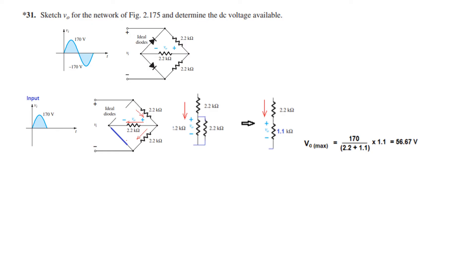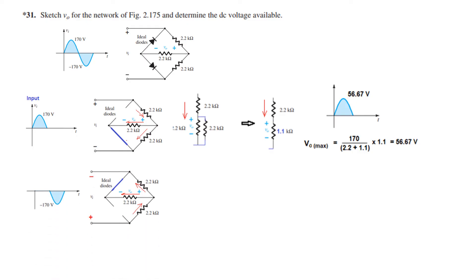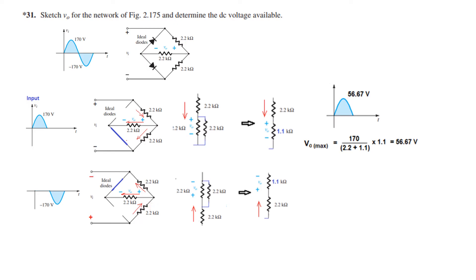This is the result for the positive half cycle. For the negative half cycle, when the top is negative, the first diode is now forward biased shown as a short circuit, and since positive is at the bottom, the other is reverse biased shown as an open circuit. Using the same technique, we draw the parallel circuits with two paths and solve for the voltage across the 1.1 kΩ parallel combination.